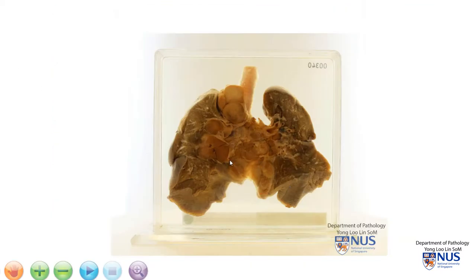In summary, we have a specimen that comprises both the lungs, the trachea, the main bronchi, and very enlarged matted mediastinal lymph nodes that have a fleshy, homogenous cut surface. This is a classical appearance of Hodgkin lymphoma.